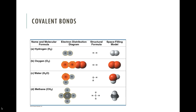Down at the bottom we have methane, which is an example of a carbon molecule. Remember, carbon has four electrons in its valence shell, which means it wants to form four bonds. We often find carbon bonded with itself and with hydrogen. Carbon likes to form big long chains with other carbon molecules and with hydrogens, and those will become important when we get to chapter three.